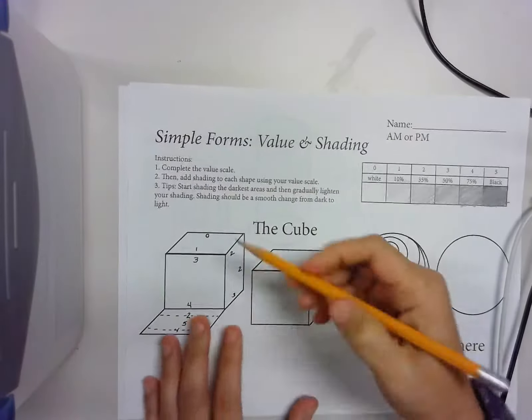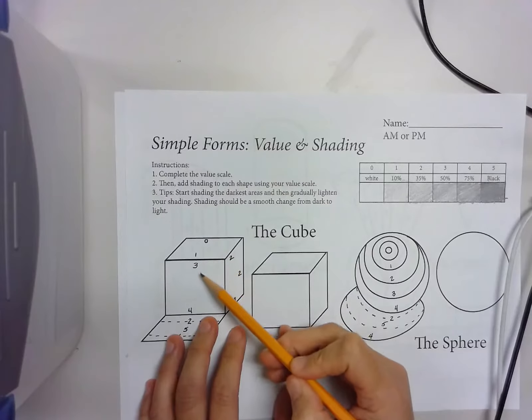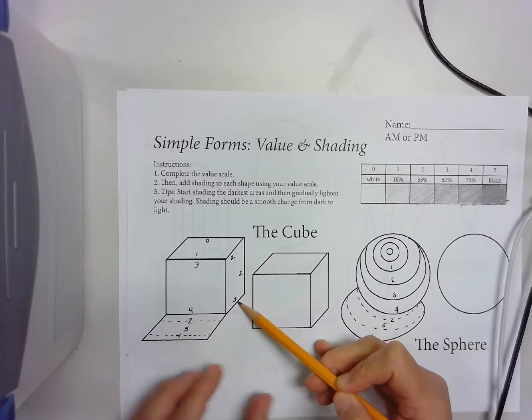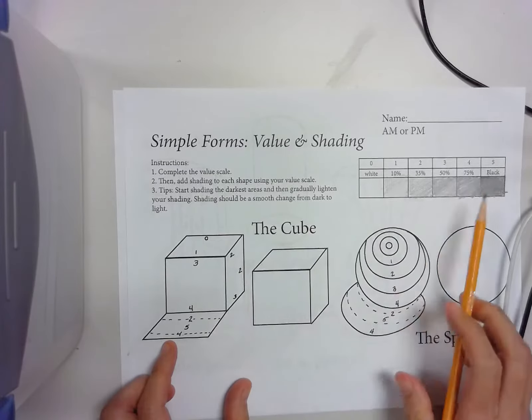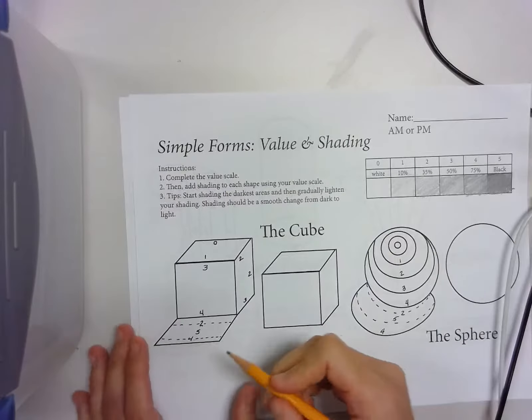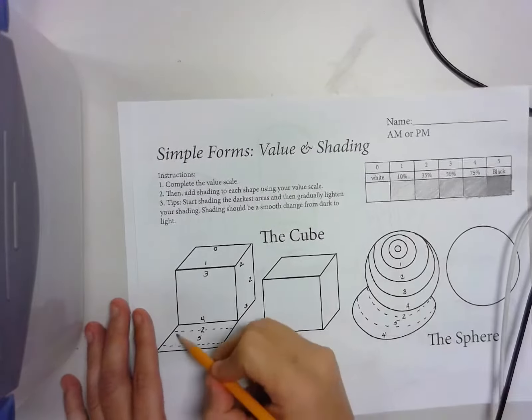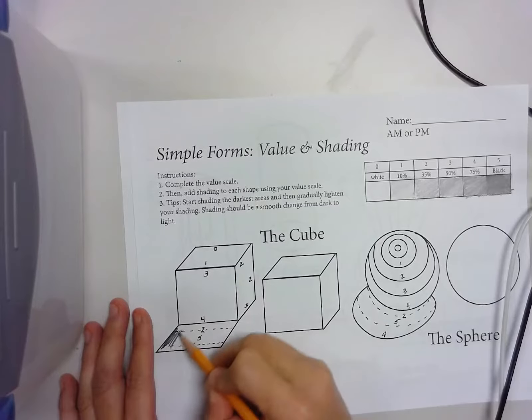With the cube, I'm going to start off with that. There's numbers here: 0, 1, 3, 4, 2, 2, 3, 2, 5, and 4. These are numbers that correspond to your value scale. I'm just going to start out with my darkest. I know 5's here.